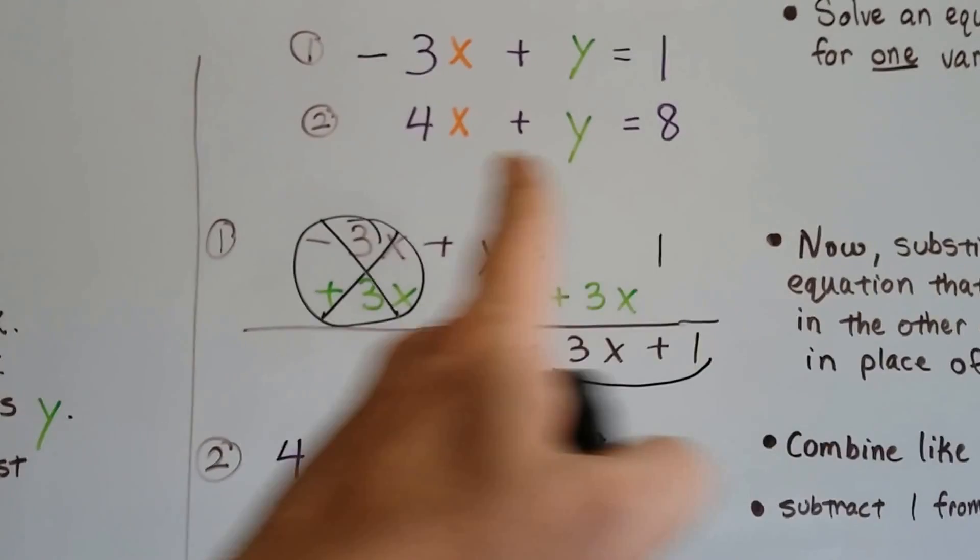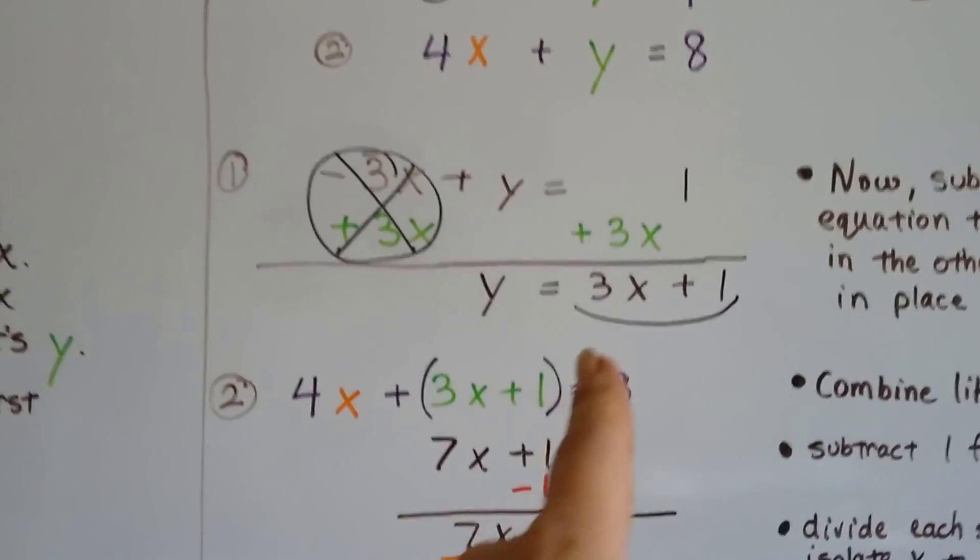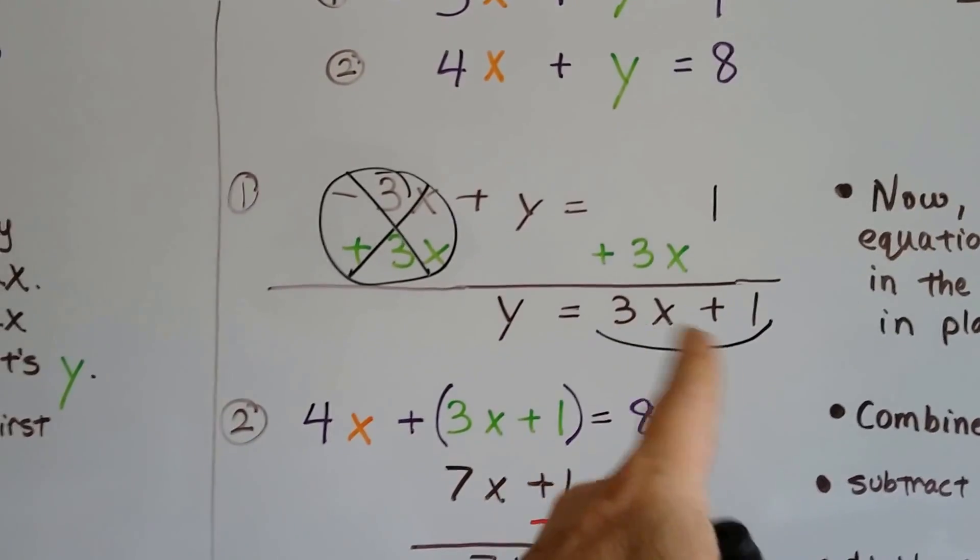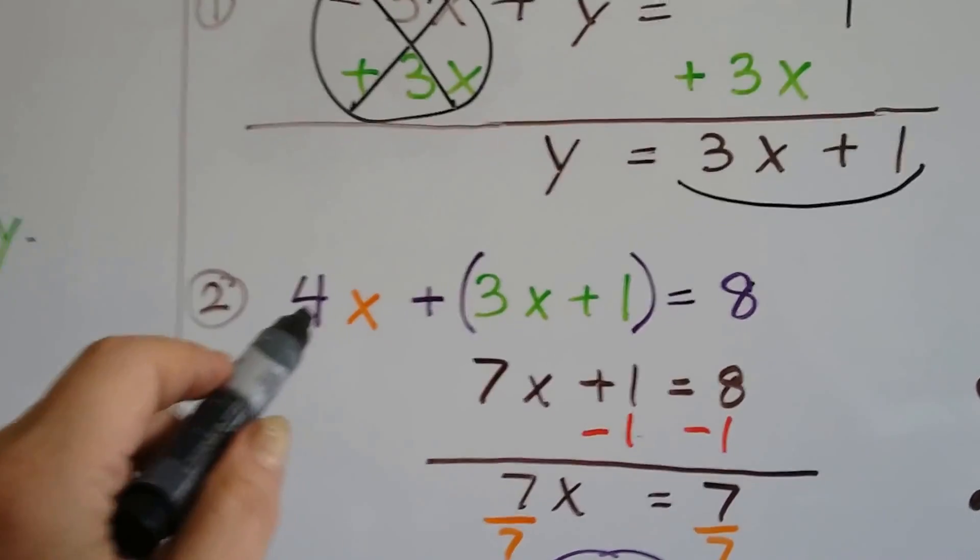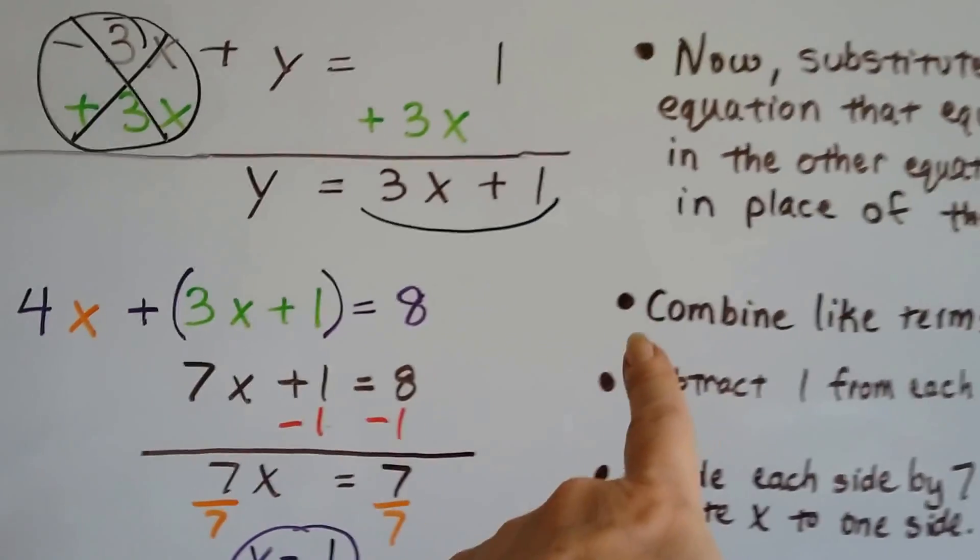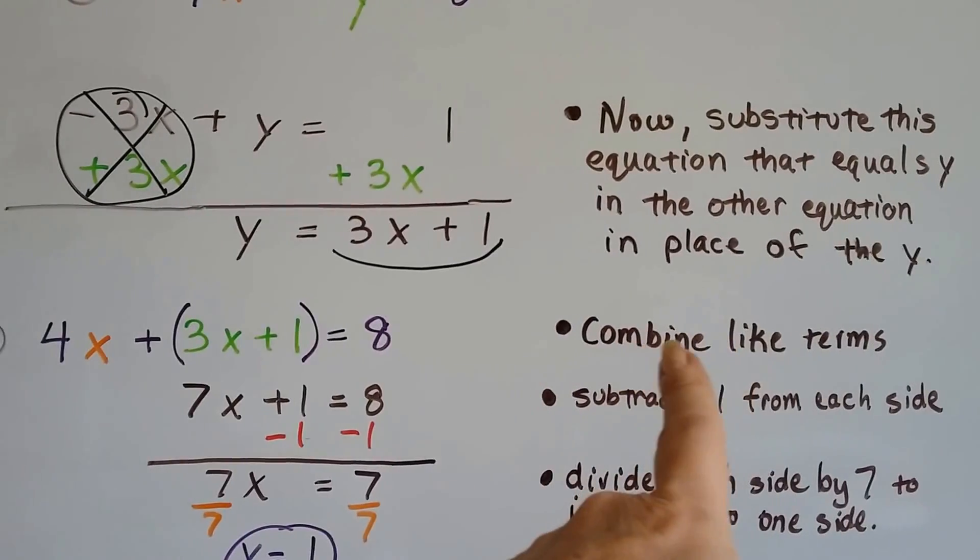4x plus y equals 8. So from now, we're going to say that that's y. 3x plus 1.